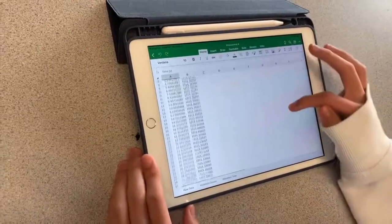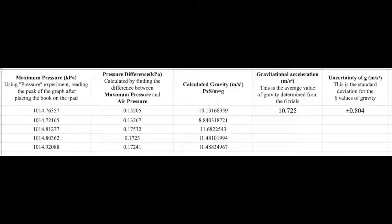Using standard deviation to calculate the uncertainty, the final gravitational acceleration we get is 10.725 plus or minus 0.804.